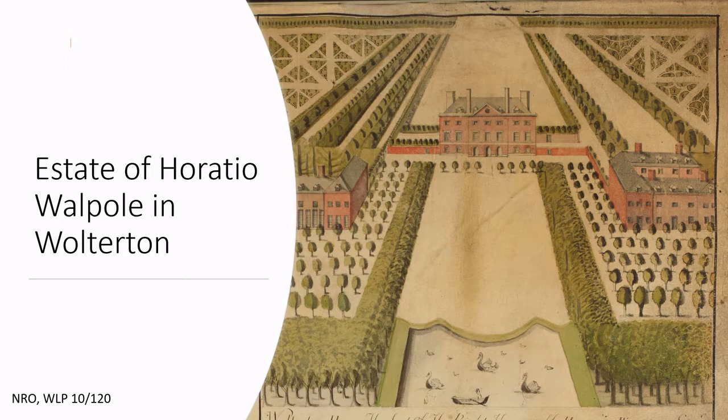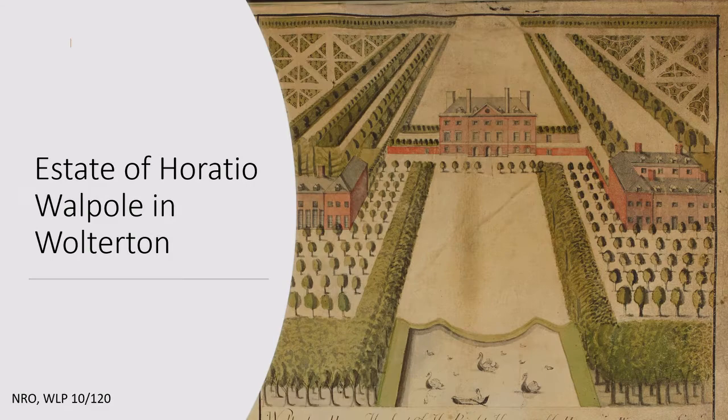This image, showing Walterton Hall in the centre, is part of a much larger plan displaying the estate of Horatio Walpole in the parishes of Walterton, Wickmere and Calthorpe. The plan dates from 1732 and was drawn up by James Corbridge. As well as the hall, which Horatio Walpole built, we can see part of the lake with swans and a rowing boat. Horatio Walpole was the first Baron of Walterton and brother to England's first Prime Minister, Sir Robert Walpole.